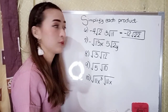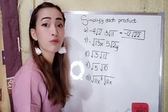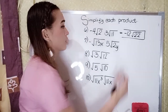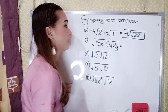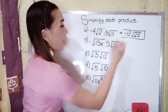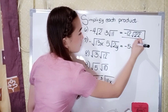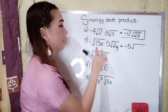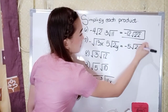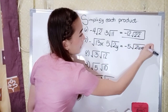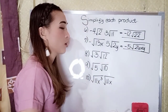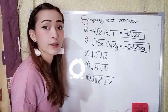For number seven, we have negative square root of thirteen x times five square root of two y. Multiply the numerical coefficients: negative one times five is negative five. Then multiply the radicands: thirteen x times two y is twenty-six x y. Our answer in number seven is negative five square root of twenty-six x y.